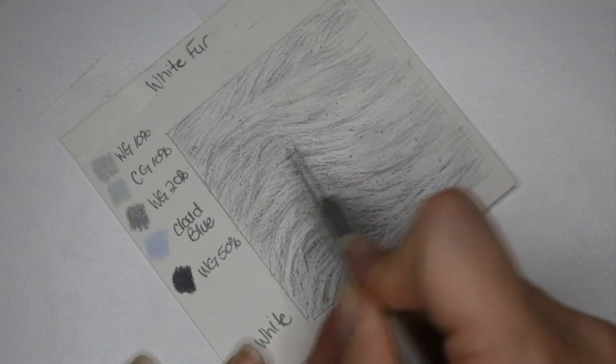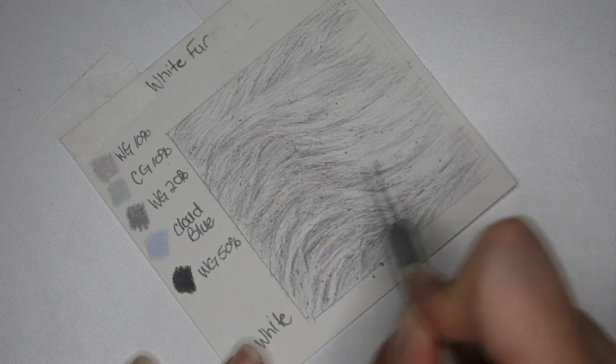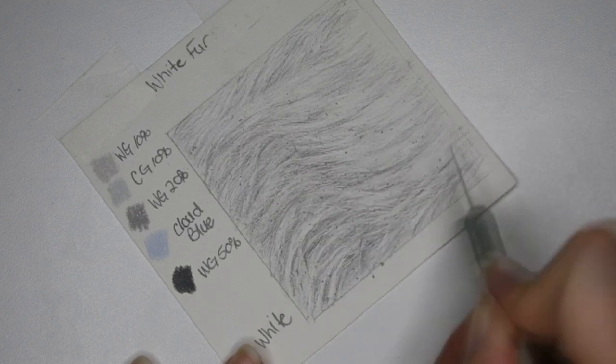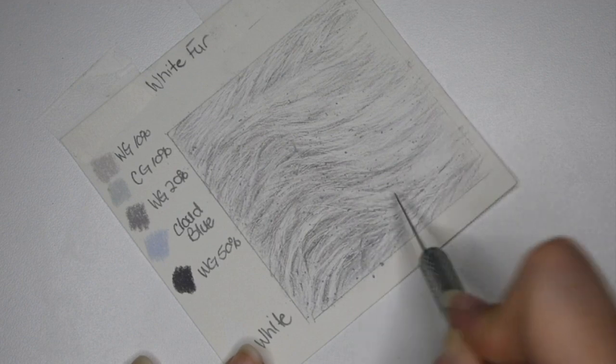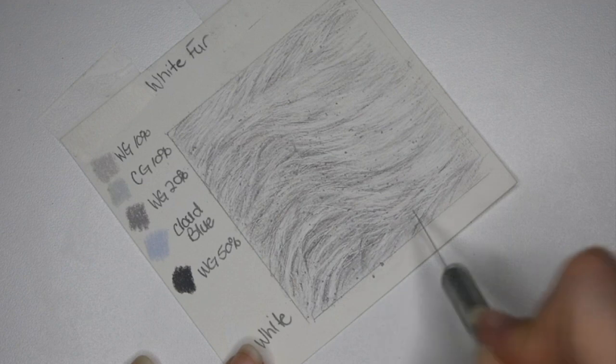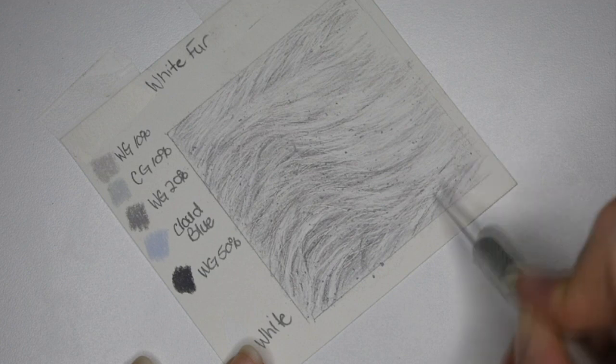To add in more fur details and to lighten up any areas I think I went too dark on, I pulled out my cutting knife and lightly using the tip of the knife went over those areas. With white fur you can be creative and try new techniques, but be very careful using the knife - you don't want to damage the paper.